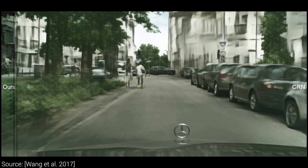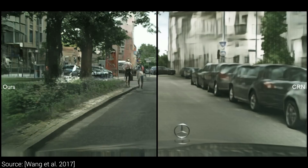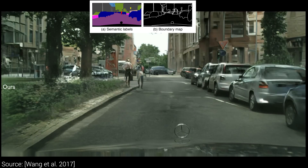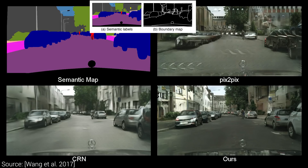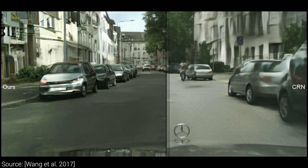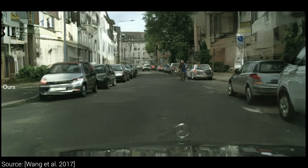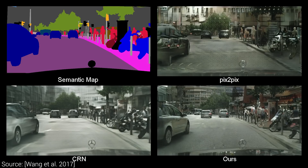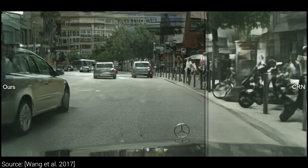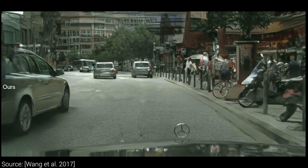Part of the trick is that the semantic map is not only used by itself, but a boundary map is also created to encourage the algorithm to create outputs with better segmentation. This boundary information turned out to be just as useful as the labels themselves. Another trick is to create multiple discriminator networks and run them on a variety of coarse to fine scale images. There is much more in the paper — make sure to have a look for more details.